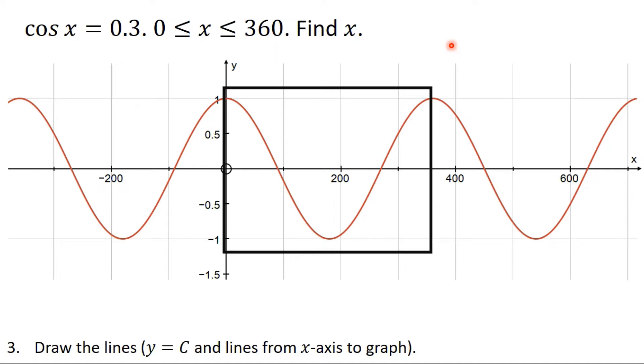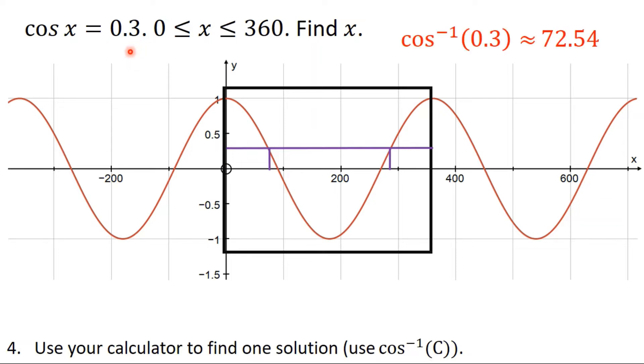Three, I'm going to draw in the lines y equals c. So in this case, y equals 0.3 and the lines going from the graph to the x-axis to mark where I'm talking about. Number four, I'm going to use my calculator to find the inverse cos of in this case 0.3, which is approximately 72.54.